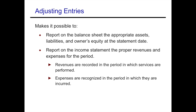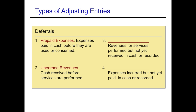Let's look at some different types of adjusting entries. The first types are deferrals — we have two types: prepaids and unearned revenues. Prepaid expenses are expenses paid in cash before they are used or consumed, like prepaid rent or prepaid utilities. Unearned revenues is when cash is received before services are performed. This specific video is going to focus on these two types of deferrals.